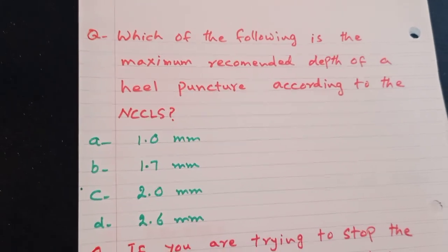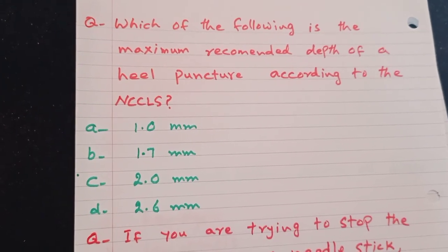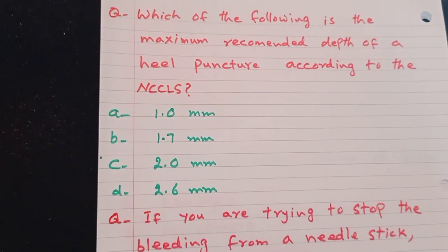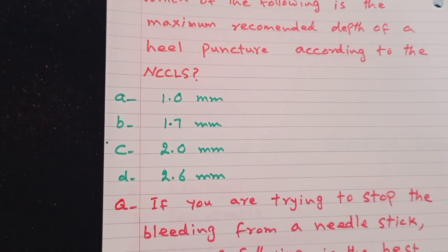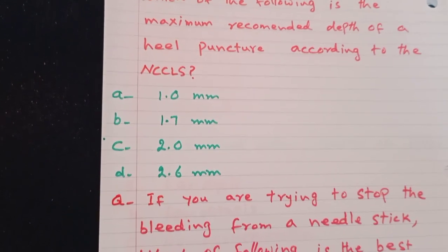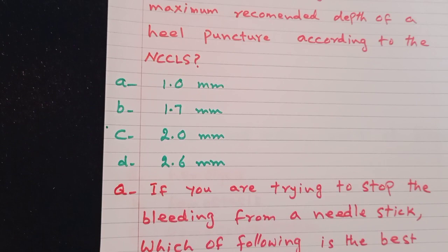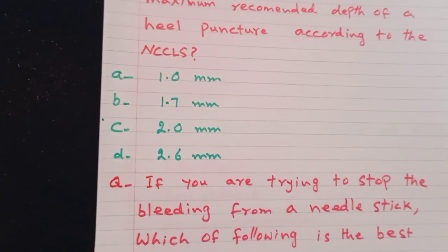Which of the following is the maximum recommended depth of a heel puncture according to the NCCLS? 1 mm, 1.7 mm, 2 mm, 2.6 mm. The answer is C, 2.0 mm.